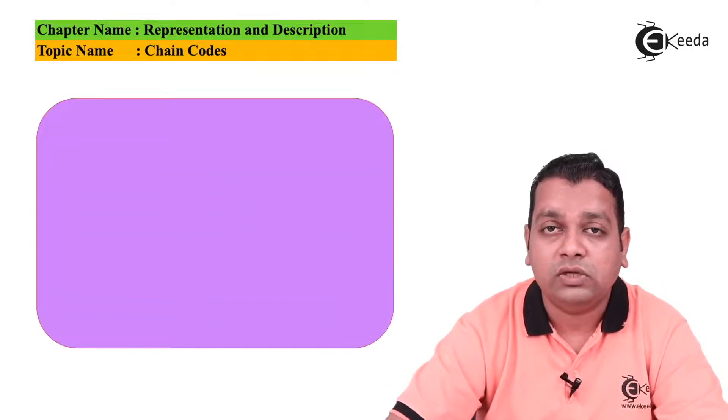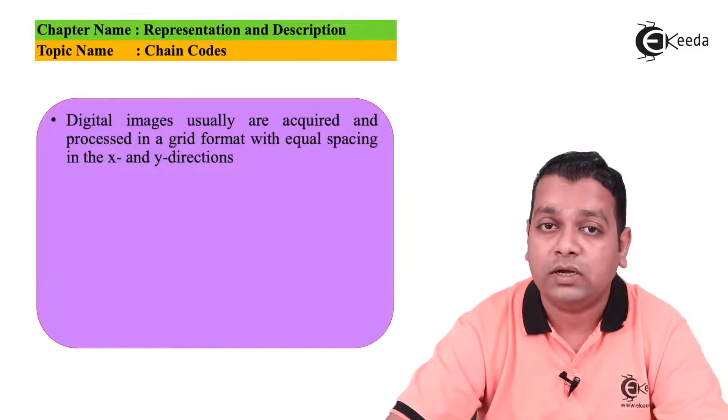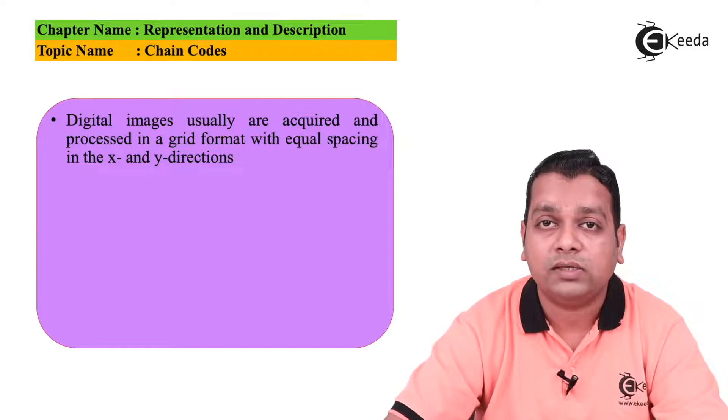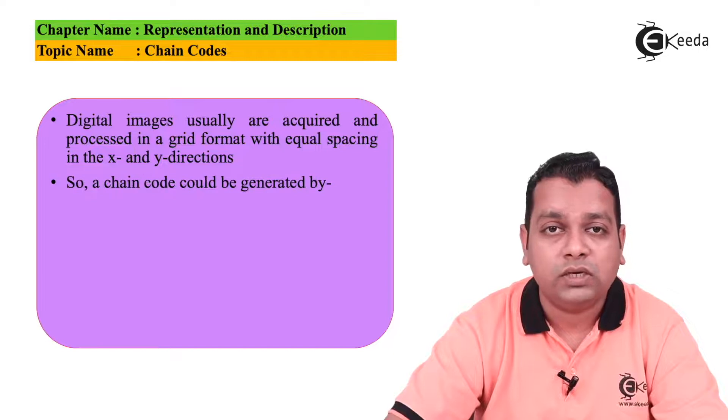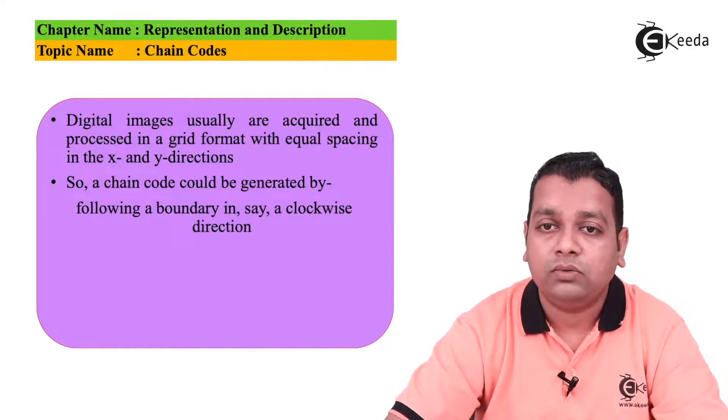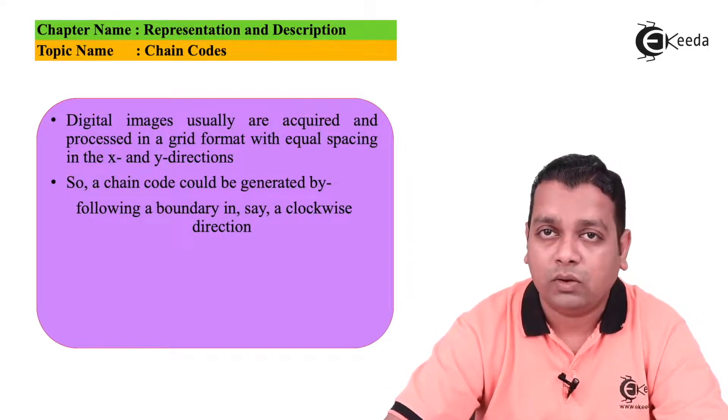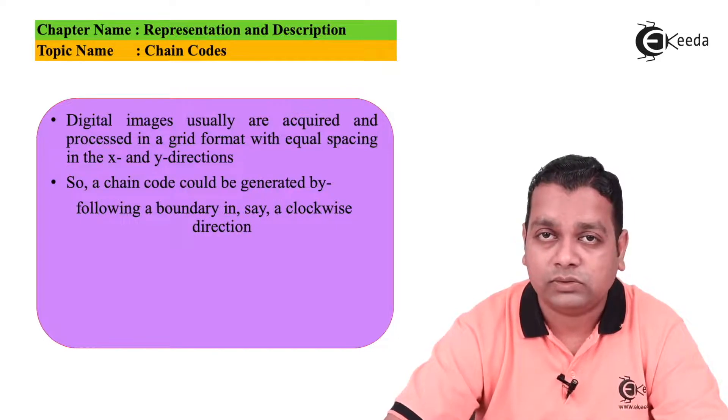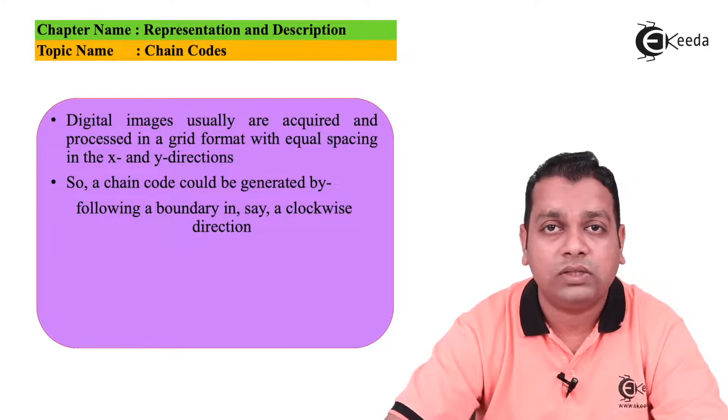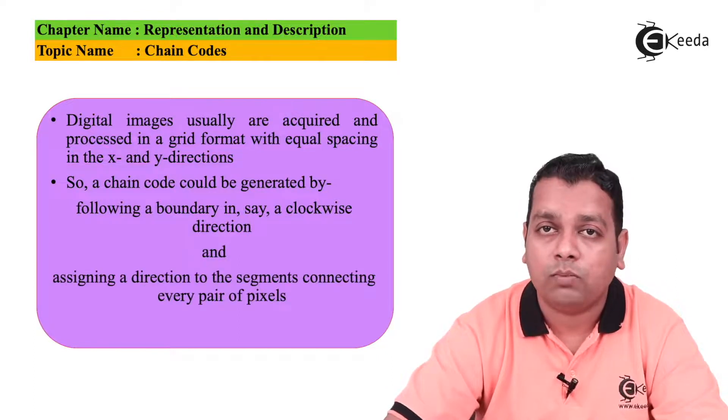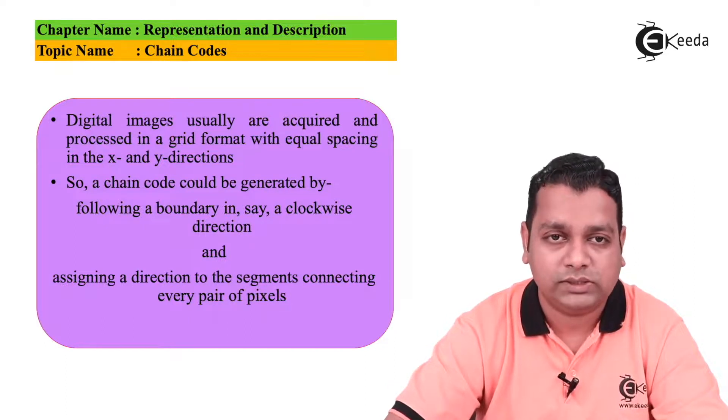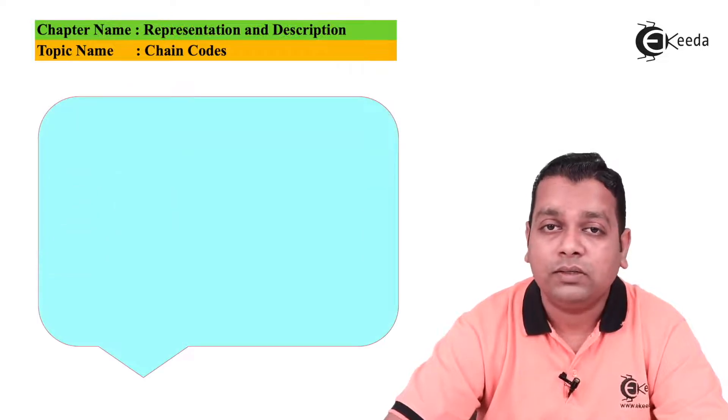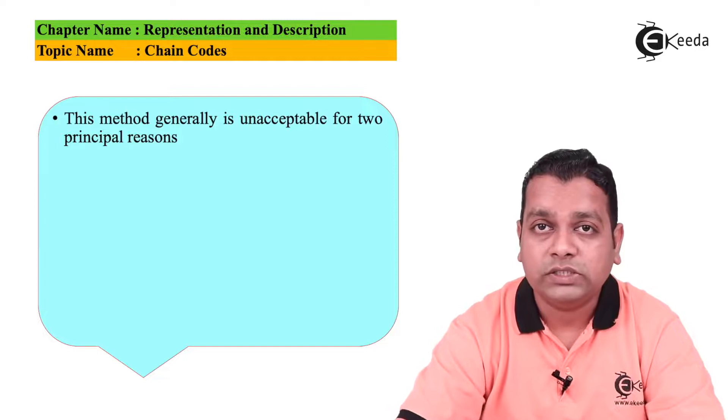Now the digital images usually are acquired and processed in a grid format with equal spacing in the x as well as y direction, the two spatial coordinate dimensions. So the chain code we can generate by following a boundary in the clockwise direction or we can also go for the anticlockwise direction. But whatever we have selected, we should be consistent with that selection. Along with following a boundary, we can be assigning a direction to the segments connecting every pair of pixels.